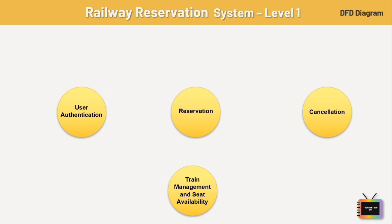The fourth process is train management and seat availability. This process manages information about trains including schedules, routes, and seat availability, and updates the train schedule in the system database. All four processes are sub-processes of railway management; these sub-processes comprise the important functions of the system which complete the whole project.